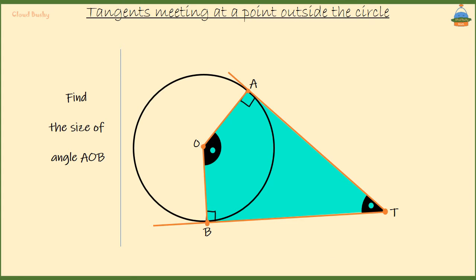So if angle ATB is 70 degrees, it means angle AOB is equal to 180 minus 70 degrees. That gives us 110 degrees.